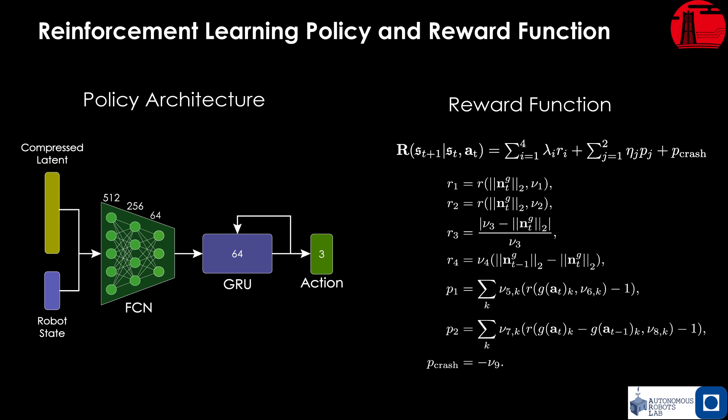The navigation policy architecture consists of a 3-layer fully connected network followed by a GRU layer. The inputs to the policy consist of the compressed latent representation and processed robot states relative to the goal location.